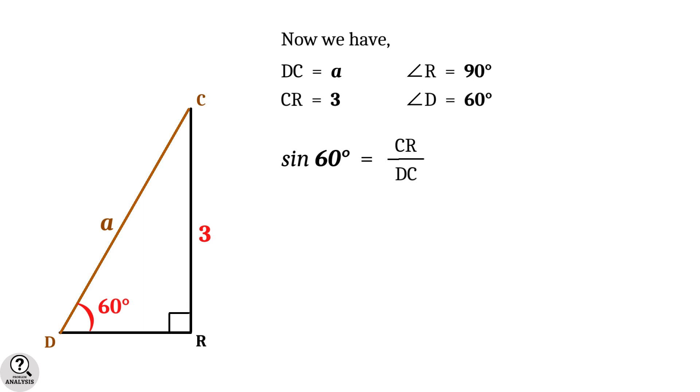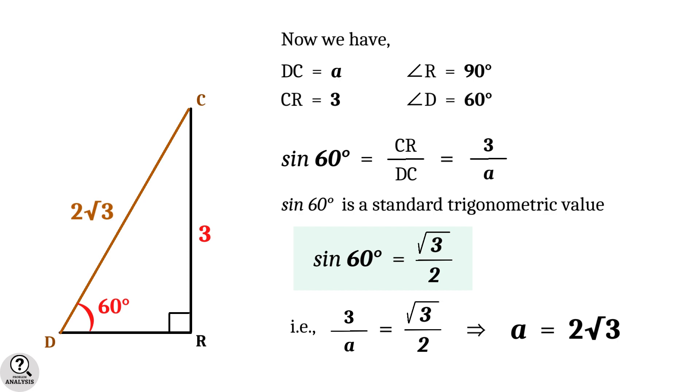By substituting, we get sin 60° = CR/DC = 3/a. But sin 60° is a standard trigonometric value which equals √3/2. That is, 3/a = √3/2, that implies a = 2√3 units.